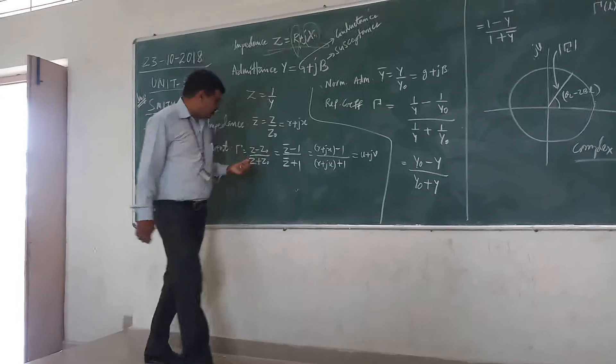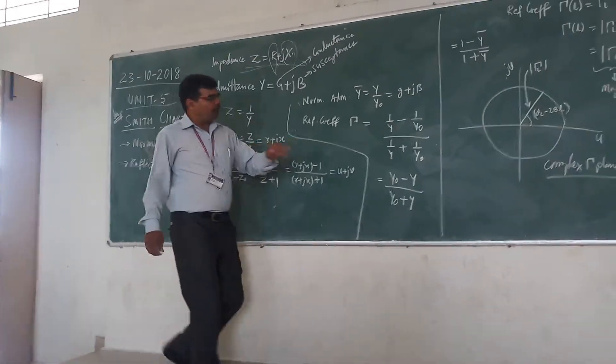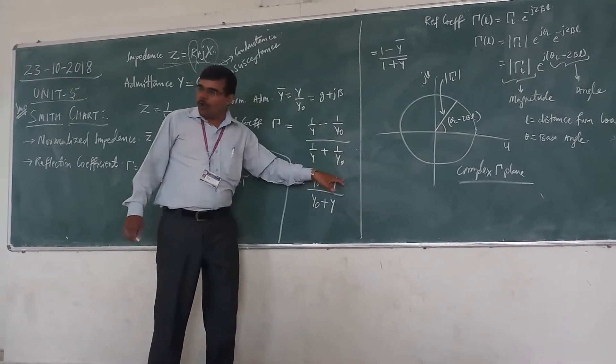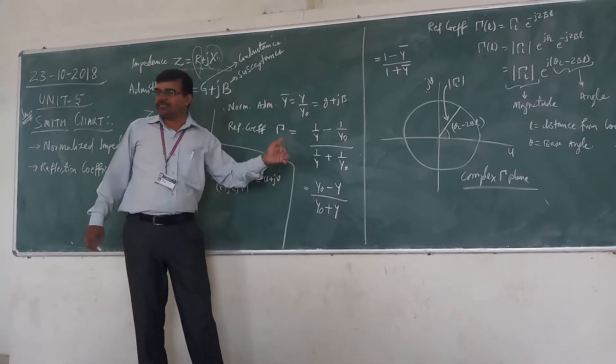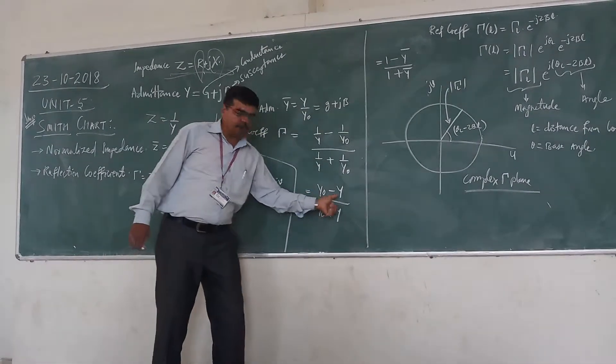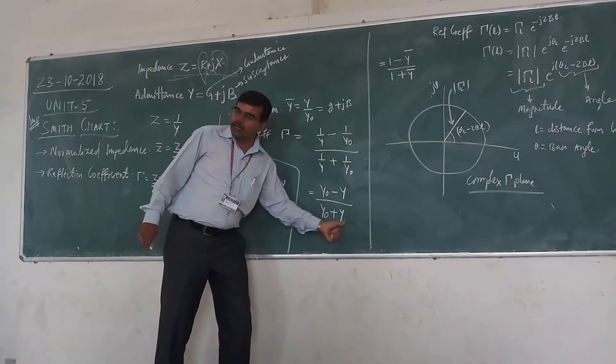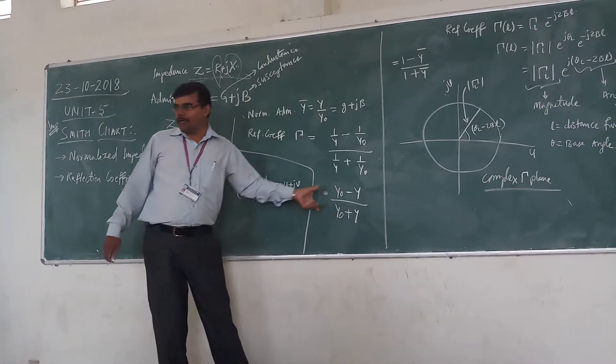And here, you have Z plus Z0. You will have 1 by Y plus 1 by Y0. If you solve this, you will get Y0 minus Y divided by Y0 plus Y.